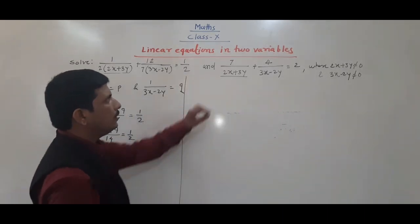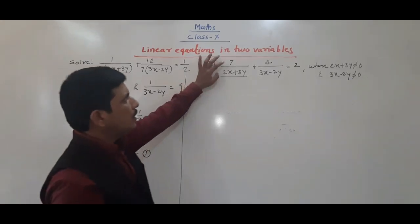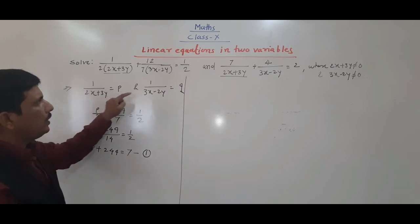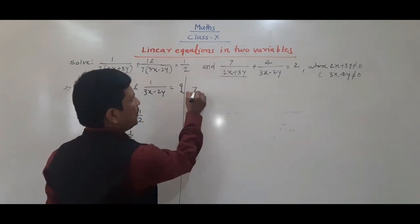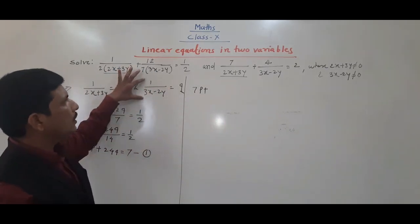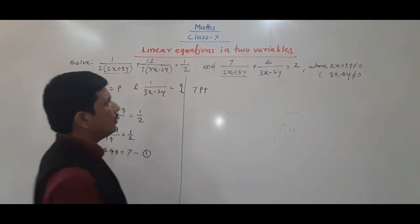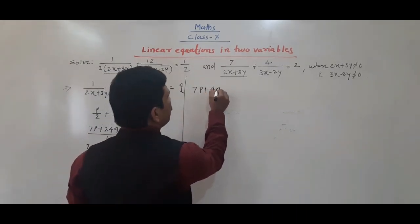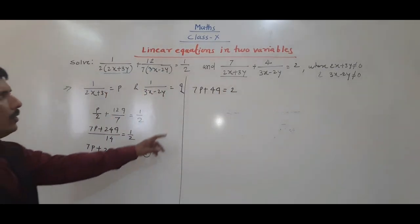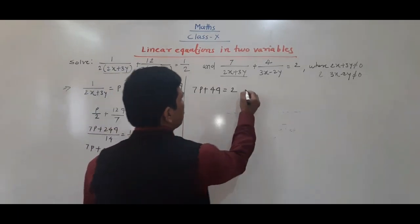Now for the second equation, using 1 upon (2x + 3y) equal to p: 7 into p gives 7p, plus 4 upon (3x - 2y) means 4 multiplied by q, so it becomes 4q equal to 2. Therefore 7p + 4q = 2. This is our second equation.